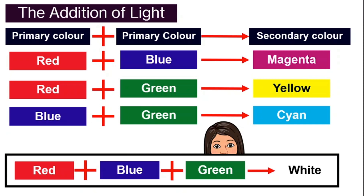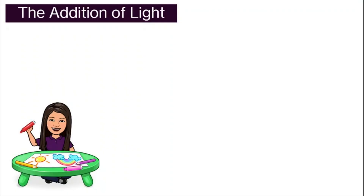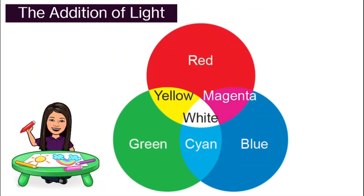Here is another infographic that might help you. We have three circles — this is the whole summary of the addition of light where we have red, blue, and green as our primary colors. The intersection between red and blue gives us magenta; red and green gives us yellow; green and blue gives us cyan; and all three overlapping gives us white. So this is our summary of the addition of light.